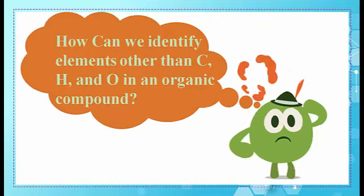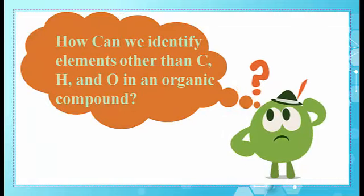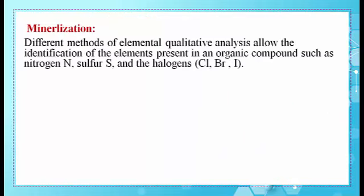But how can we identify elements other than carbon, hydrogen, and oxygen in an organic compound? We use mineralization. During mineralization, different methods of elemental qualitative analysis allow the identification of elements present in an organic compound such as nitrogen (N), sulfur (S), and the halogens Cl, Br, and I.